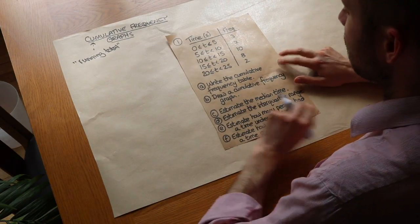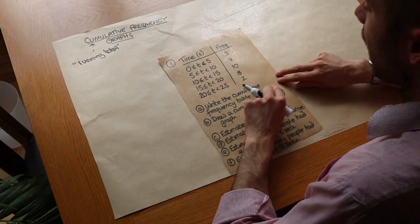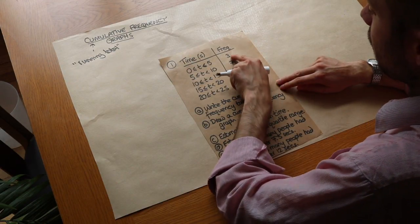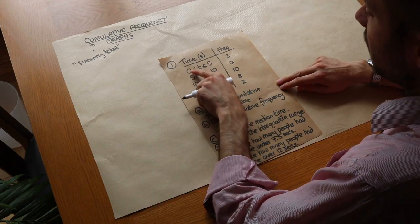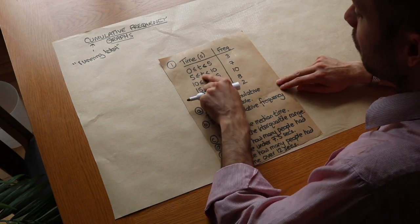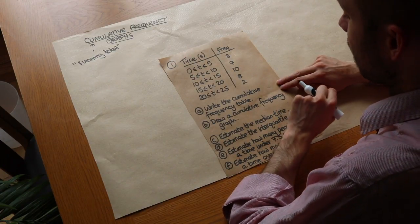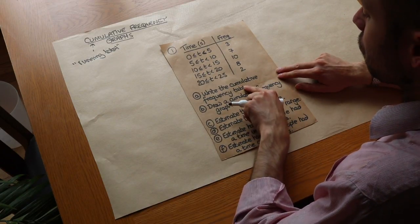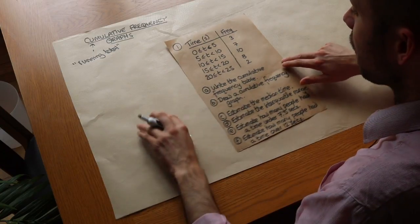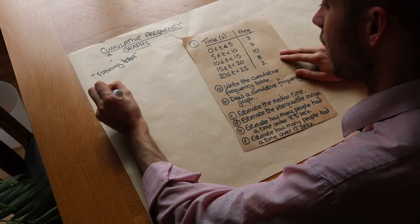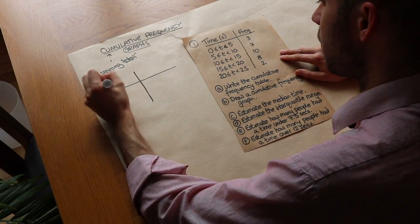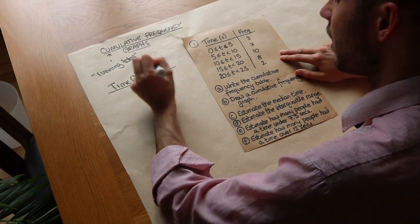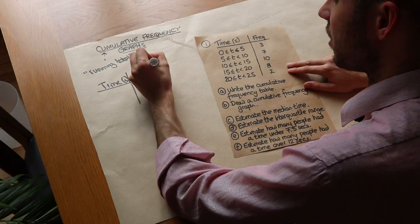It's easiest if we just dive straight into this question. We've got a grouped frequency table with different time ranges. Three people had a time between zero and five seconds, seven people had a time between five and ten seconds, etc. We want to draw a cumulative frequency table first. We've got time in seconds, but instead of frequency we've got cumulative frequency.